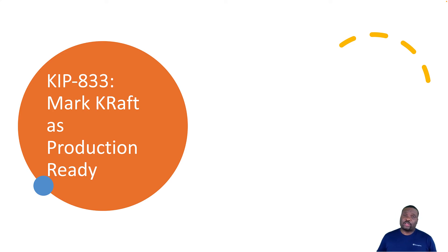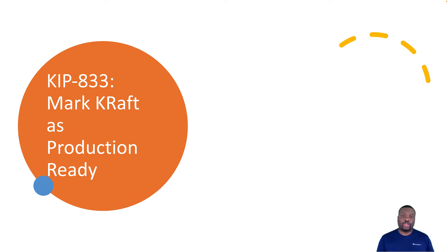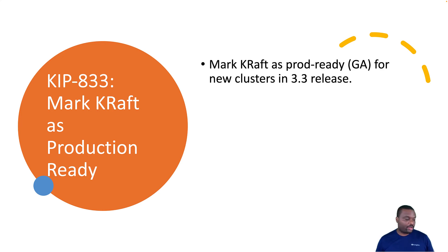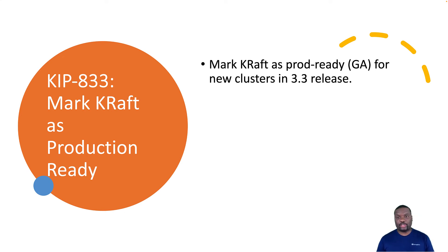Now let's talk about changes coming in future Kafka releases regarding marking KRaft mode as production ready, also known as GA. Kafka releases typically come out every three to four months. The latest release is 3.2, which came out in May 2022, so the 3.3 release should be coming out around September 2022. This means KRaft mode being generally available should be expected in the 3.3 release.